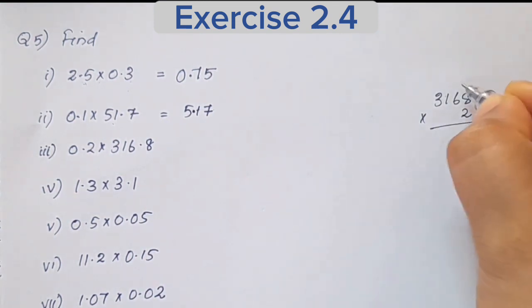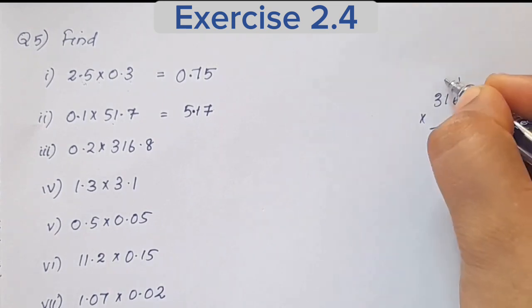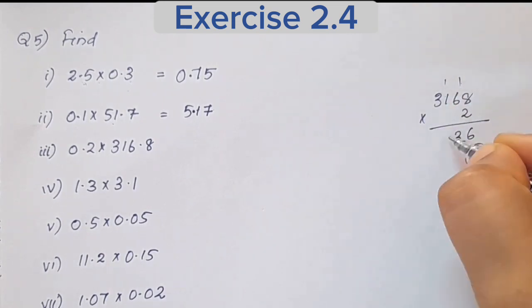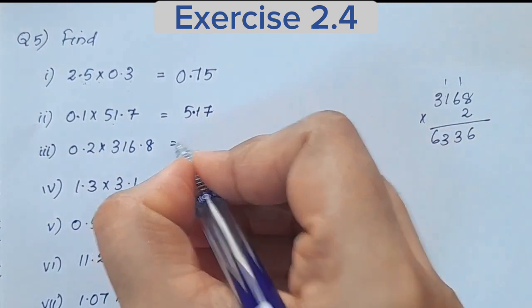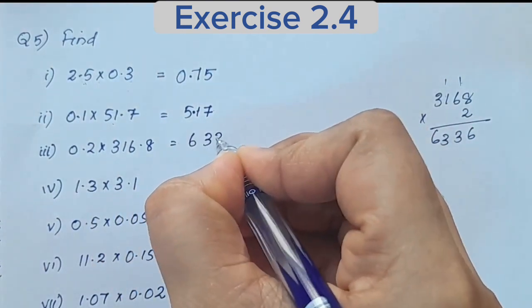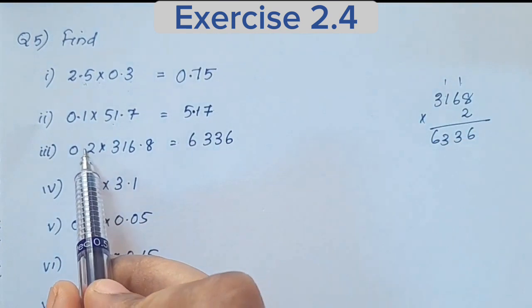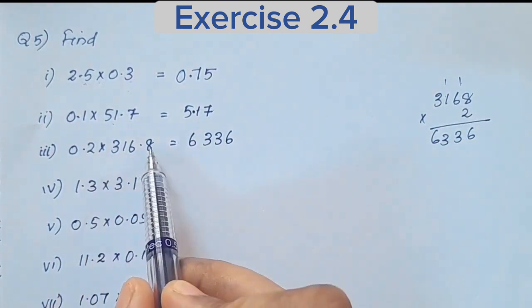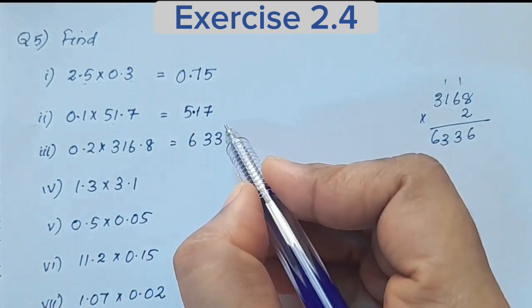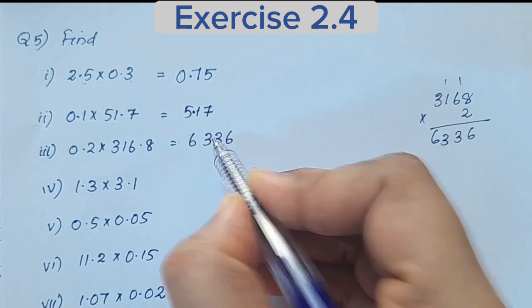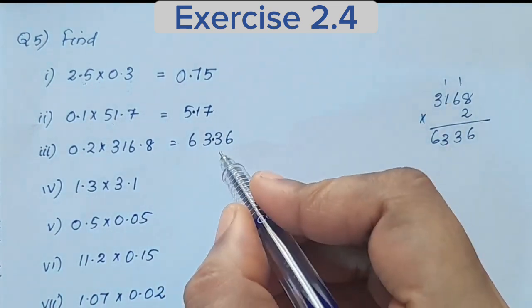3168 × 2: 2×8 is 16, carry 1; 2×6 is 12 plus 1 is 13, carry 1; 2×1 is 2 plus 1 is 3; 2×3 is 6. Result is 6336. The decimal point total is 1 plus 1 = 2 digits, so the answer is 63.36.